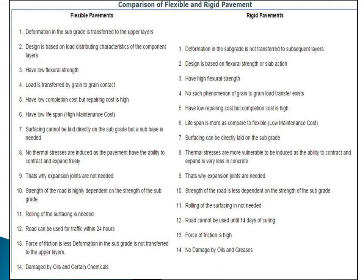The eleventh point: rolling of the surfacing is needed in case of flexible pavement. During construction of bituminous pavement you use pneumatic tire rollers and steel drum rollers for compaction. But in case of rigid pavement, no rollers are used — large pavers are used, the concrete is internally vibrated, and air voids are removed by internal compaction; no external rollers are required.